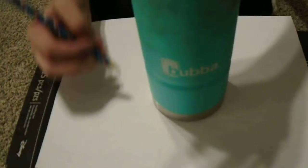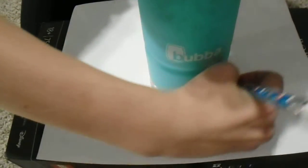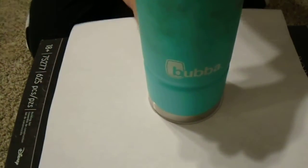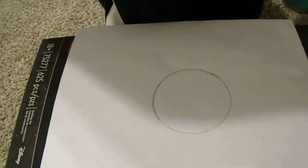So first, we start off with a simple design of a circle. Any circle you like, for example, I'm using the bottom of a water bottle, which you can put anywhere you want on the paper. Then you take your pencil and trace. As you can see, we have a circle.